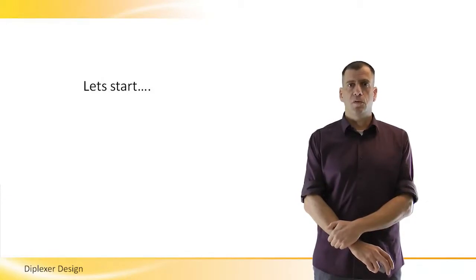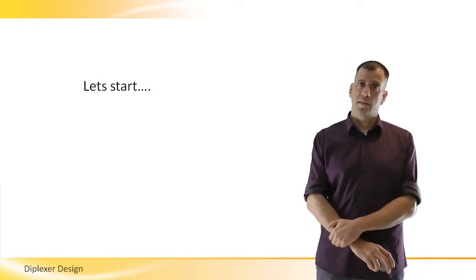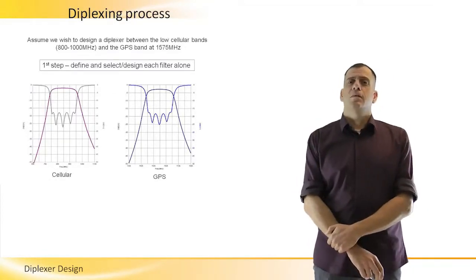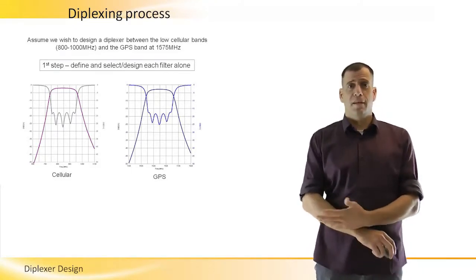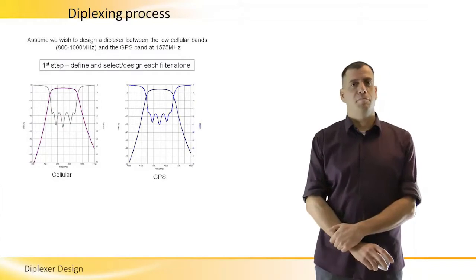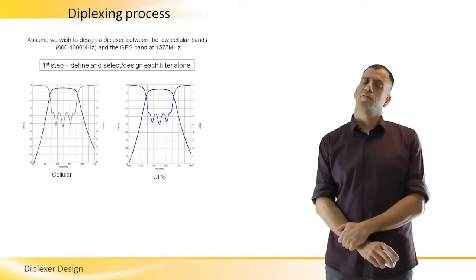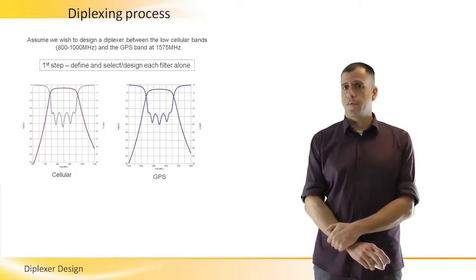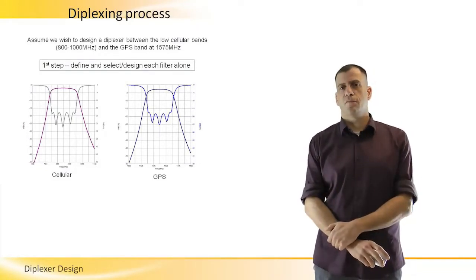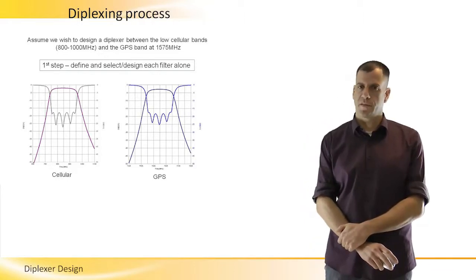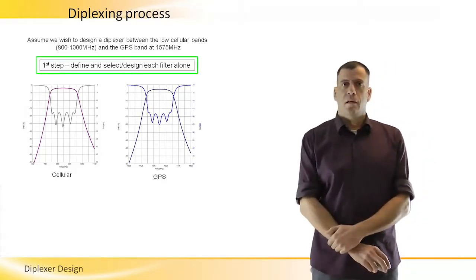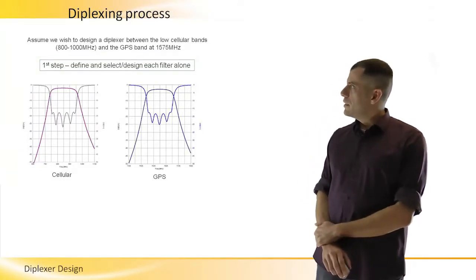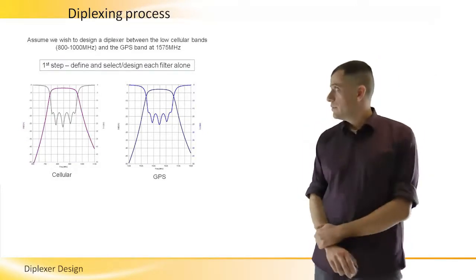Now having the Smith chart tools in our hand, we are ready to start designing a diplexer. Let's say we wish to design a diplexer between the cellular band 800 to 1000 MHz and the GPS band in frequency at 1575 MHz. For this task, we start by selecting filters which are satisfying for us in terms of rejection, insertion loss, and return loss.